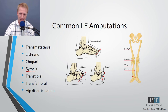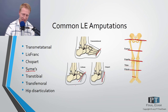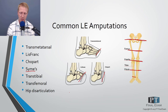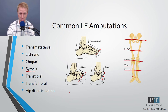Then we have the classic transtibial or below-knee amputation. A knee disarticulation is not very common anymore — they prefer either transtibial or transfemoral. A hip disarticulation is also possible. With vascular insufficiency, the degree of ischemic tissue death determines how low you go with the amputation.